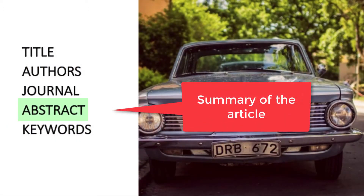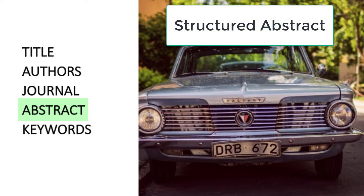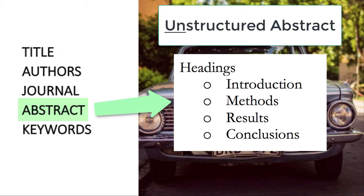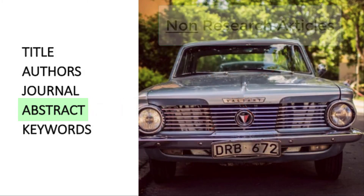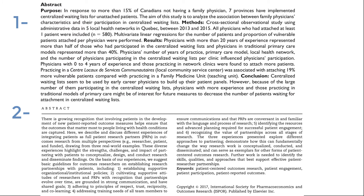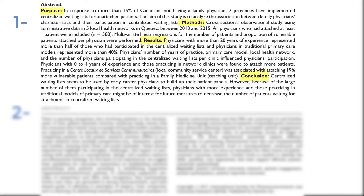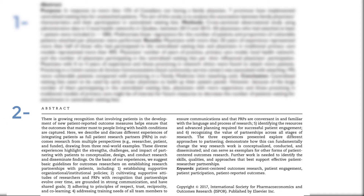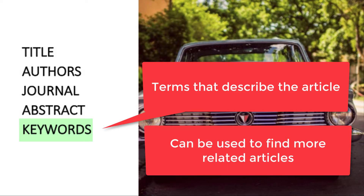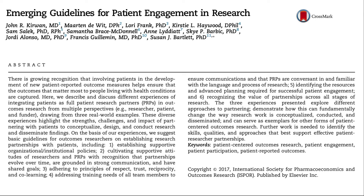The abstract is a summary of the article. It helps us determine whether we should read the entire article or not, and abstracts are often available for free online. Most scientific journals have a structured abstract with headings like introduction, methods, results, and conclusions. An unstructured abstract has similar information but without the headings. Non-research articles may also have an abstract, but it will not discuss the research process. Here you see the first abstract is structured with those headings, while this example is not. Keywords are terms that describe the article. They are provided by the authors or added by librarians or automatically. You can use these to find more related articles.